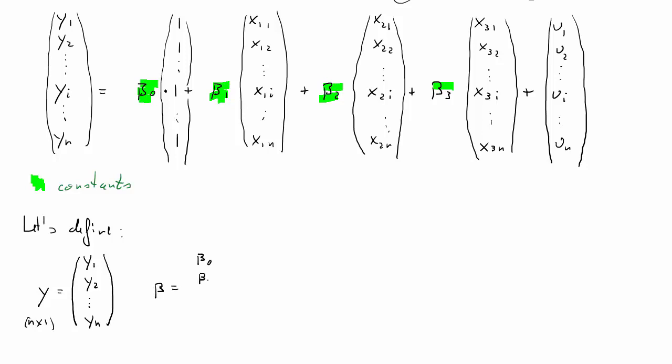Then we shall define a vector which collects all the coefficients, beta 0 to beta 3. So the dimension of this is, let me call it k. It's really 4, as you can see. We have 4 coefficients. But let's call it k. The reason for this should be obvious very soon.